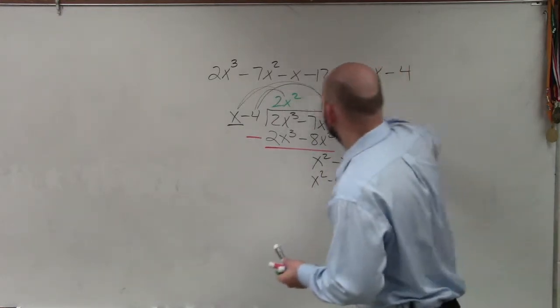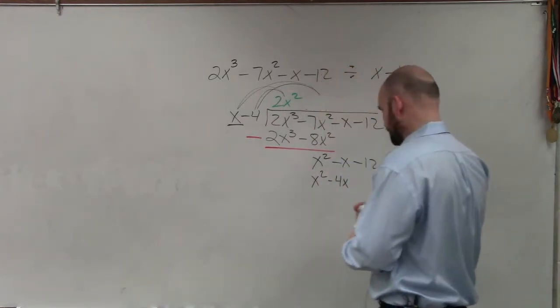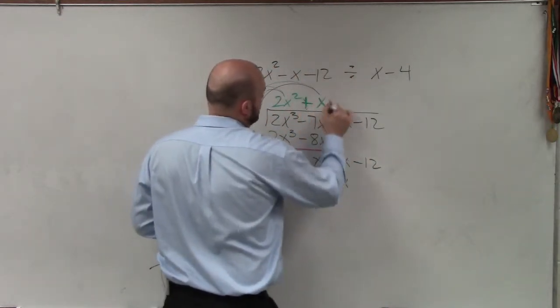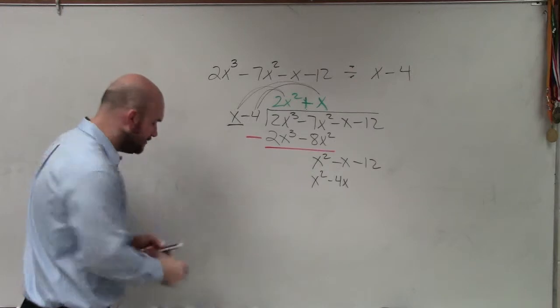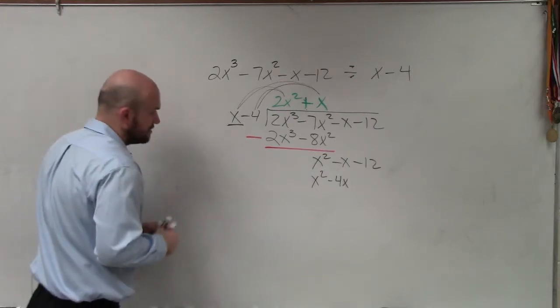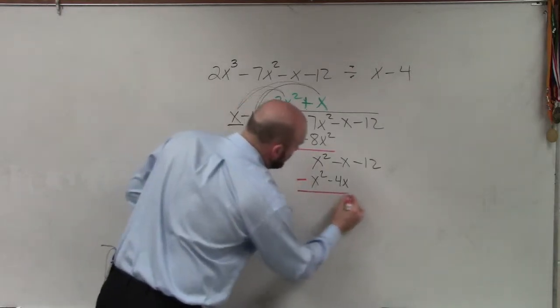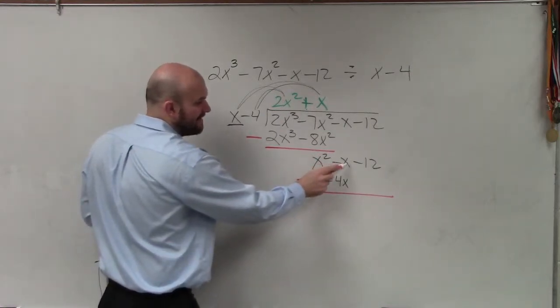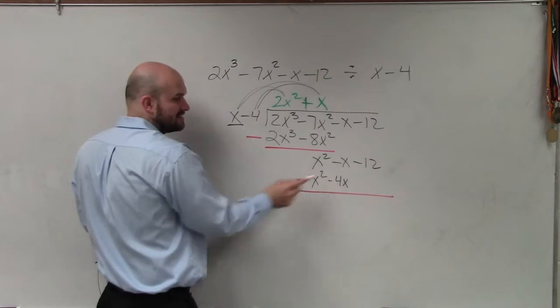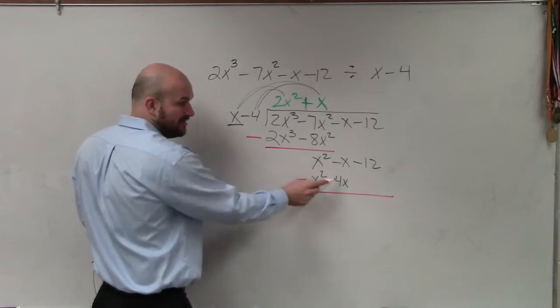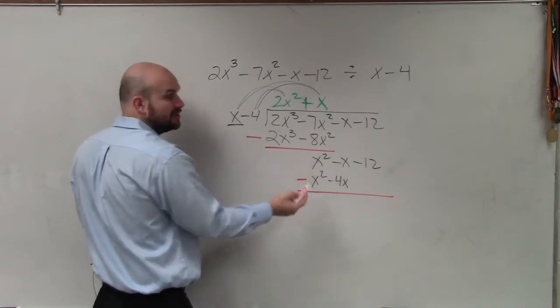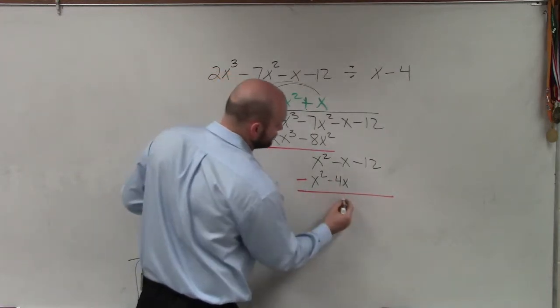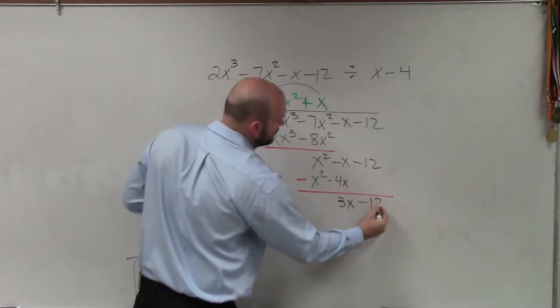Again, oops, why didn't I put that in green? It's the same number. I'm just putting it in green. So now, again, we subtract the rows. x squared minus x squared is 0x squared, which is just 0. Negative x minus a negative x. That, again, is a double negative, right? So it's really like negative x minus negative 4x, which is just going to give you 3x. Subtract. Bring down the 12.